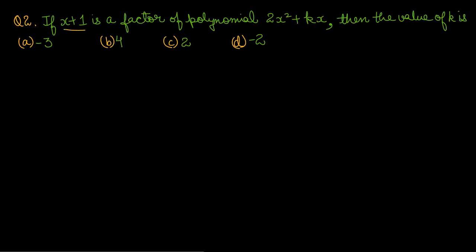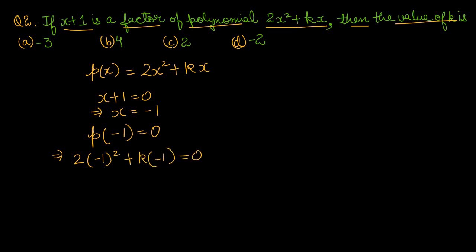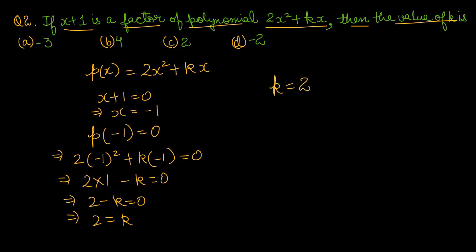Question number 2: if x plus 1 is a factor of polynomial 2x square plus kx, then the value of k is. वो कहता है x plus 1 इस polynomial का factor है। Polynomial हमारे पास है 2x² + kx। अगर x plus 1 इसका factor है, तो x plus 1 को 0 के equal करेंगे, यहाँ से x = -1। यह value polynomial में fit करने पर: 2(-1)² + k(-1) = 0 → 2 - k = 0 → k = 2। That is option number C is the right one.